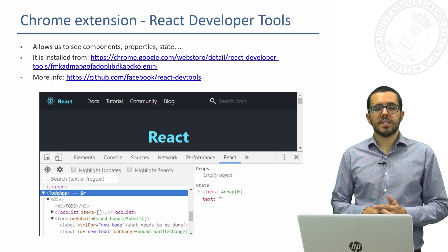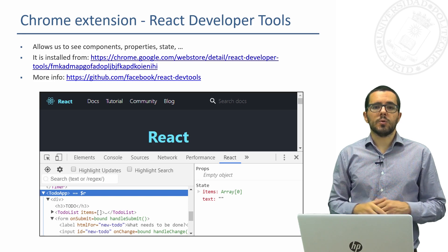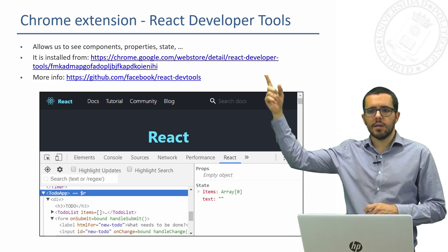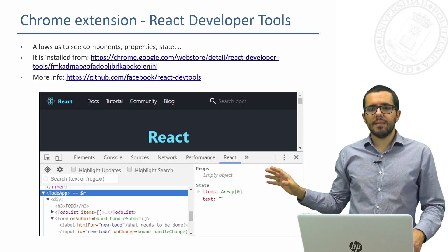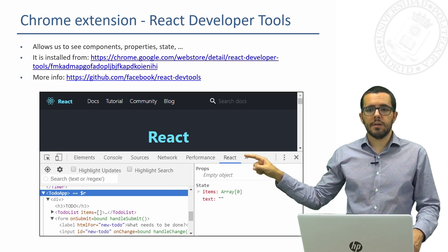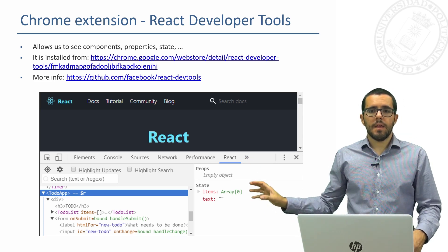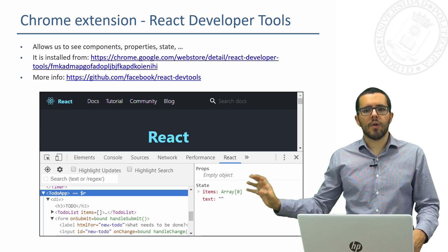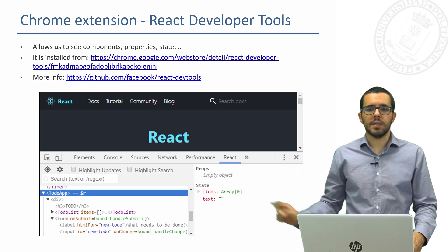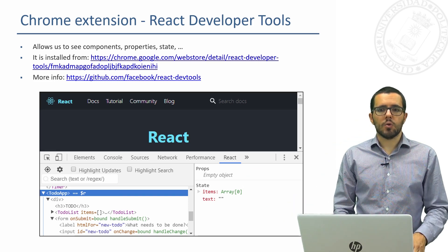For React we will have a special extension, a Chrome extension that can be installed from this URL — you just write React developer tools on Chrome if you don't want to write the URL — and you get a special tab here in the developer tools. It will show us the React components of our page, and we will also be able to see the state, the props, and any other React content.